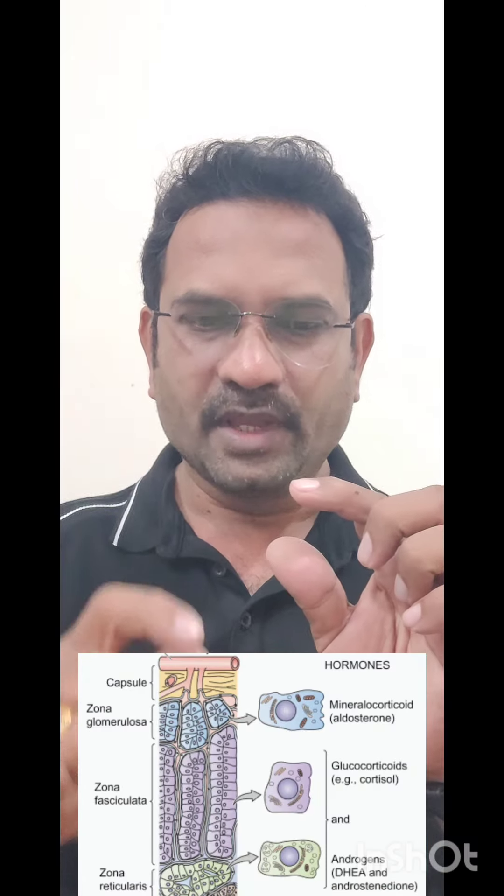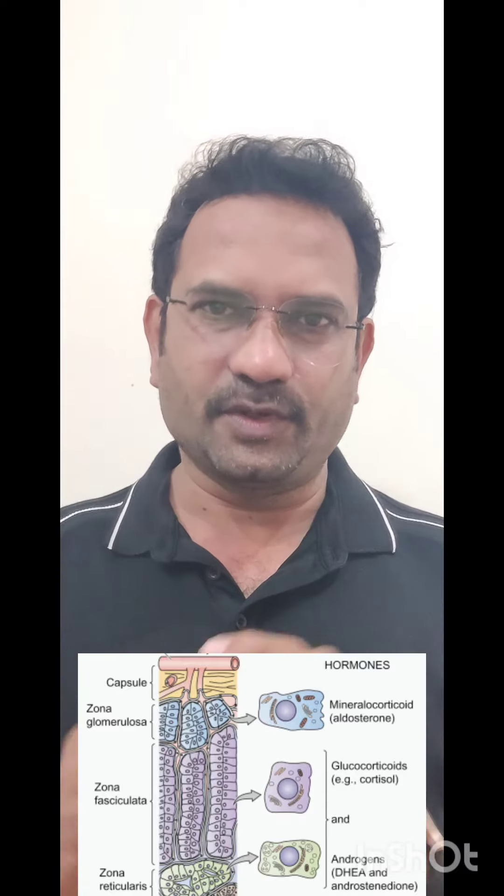Zona glomerulosa is the top layer. It secretes mineralocorticoids. 'Mineral' refers to sodium, and 'corticoid' refers to cortex-released hormones. These hormones control mineral metabolism, hence they are called mineralocorticoids. The natural mineralocorticoid is aldosterone, which is a steroidal hormone.